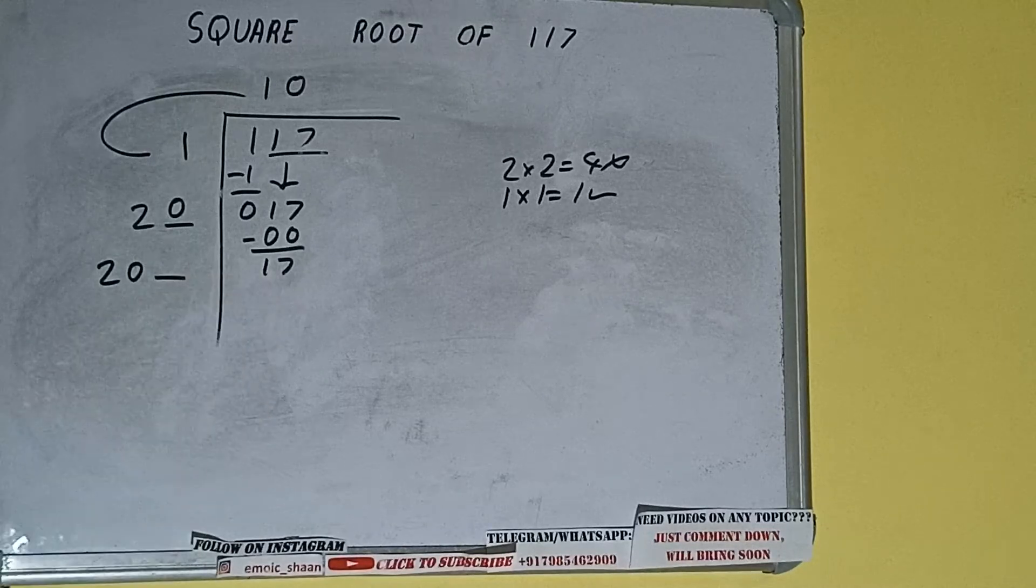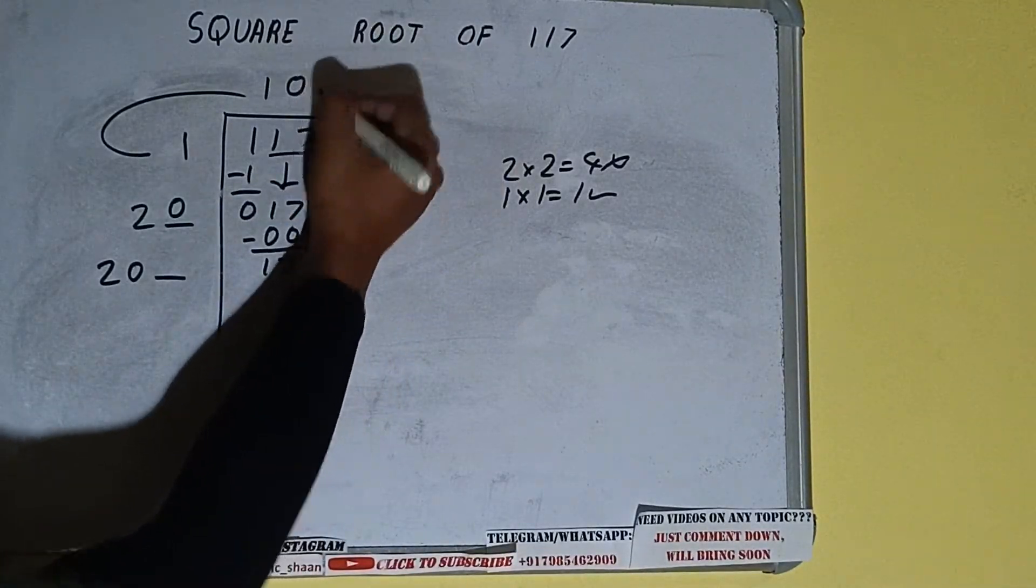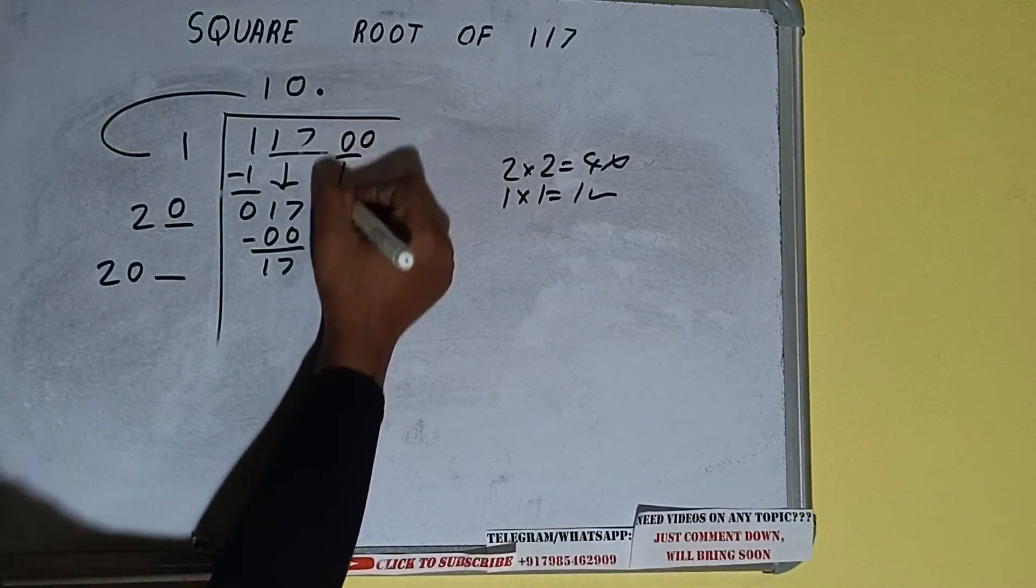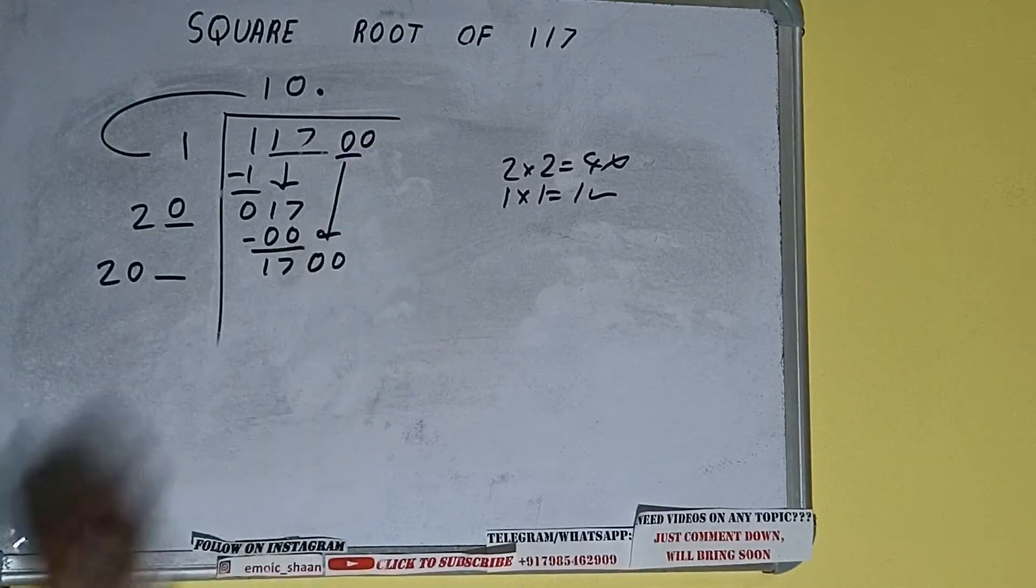And this number we need to make it big but we don't have more pairs so we'll put decimal. Once I put decimal we can bring pair of zeros down and number will be 1700.